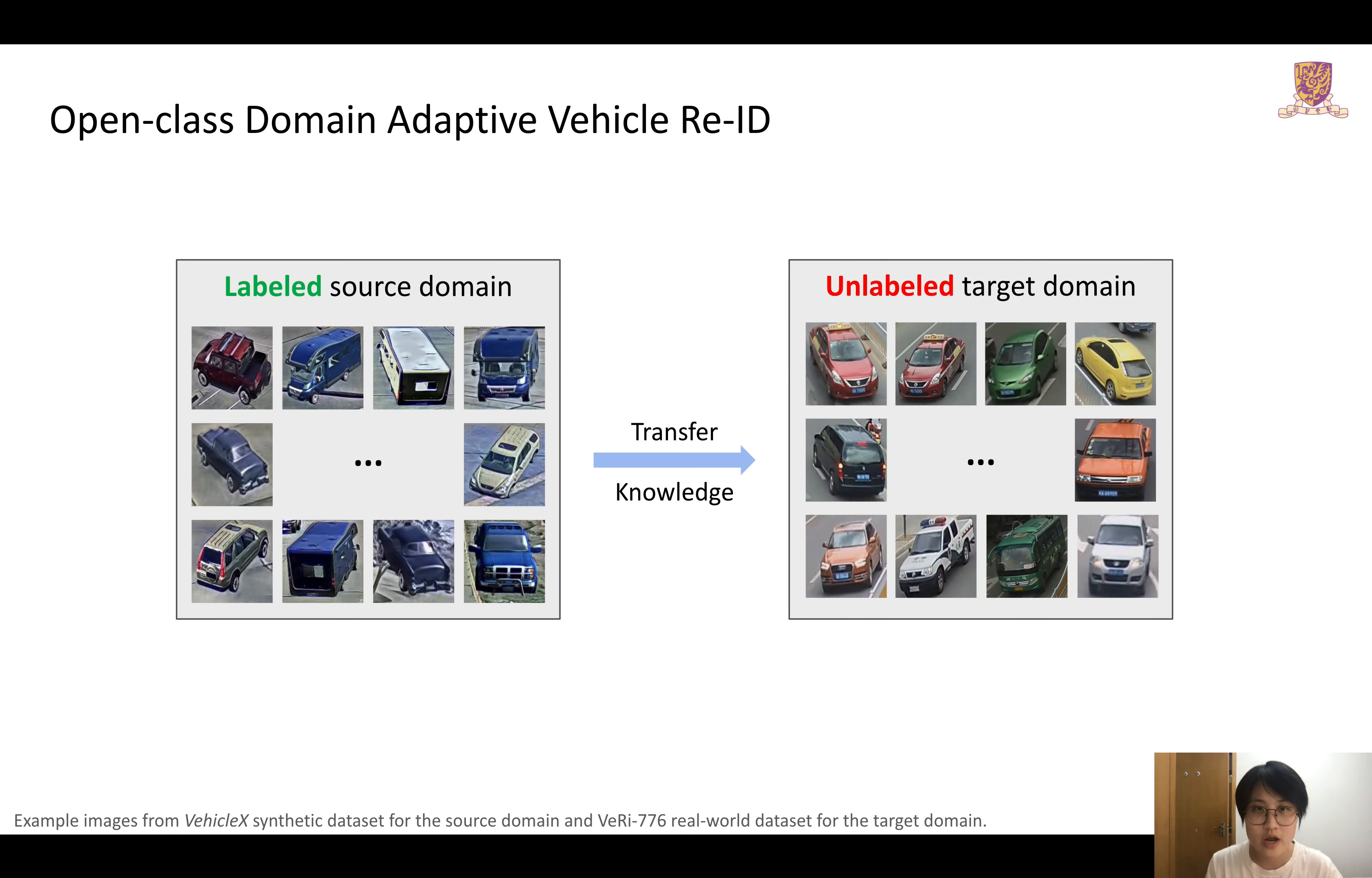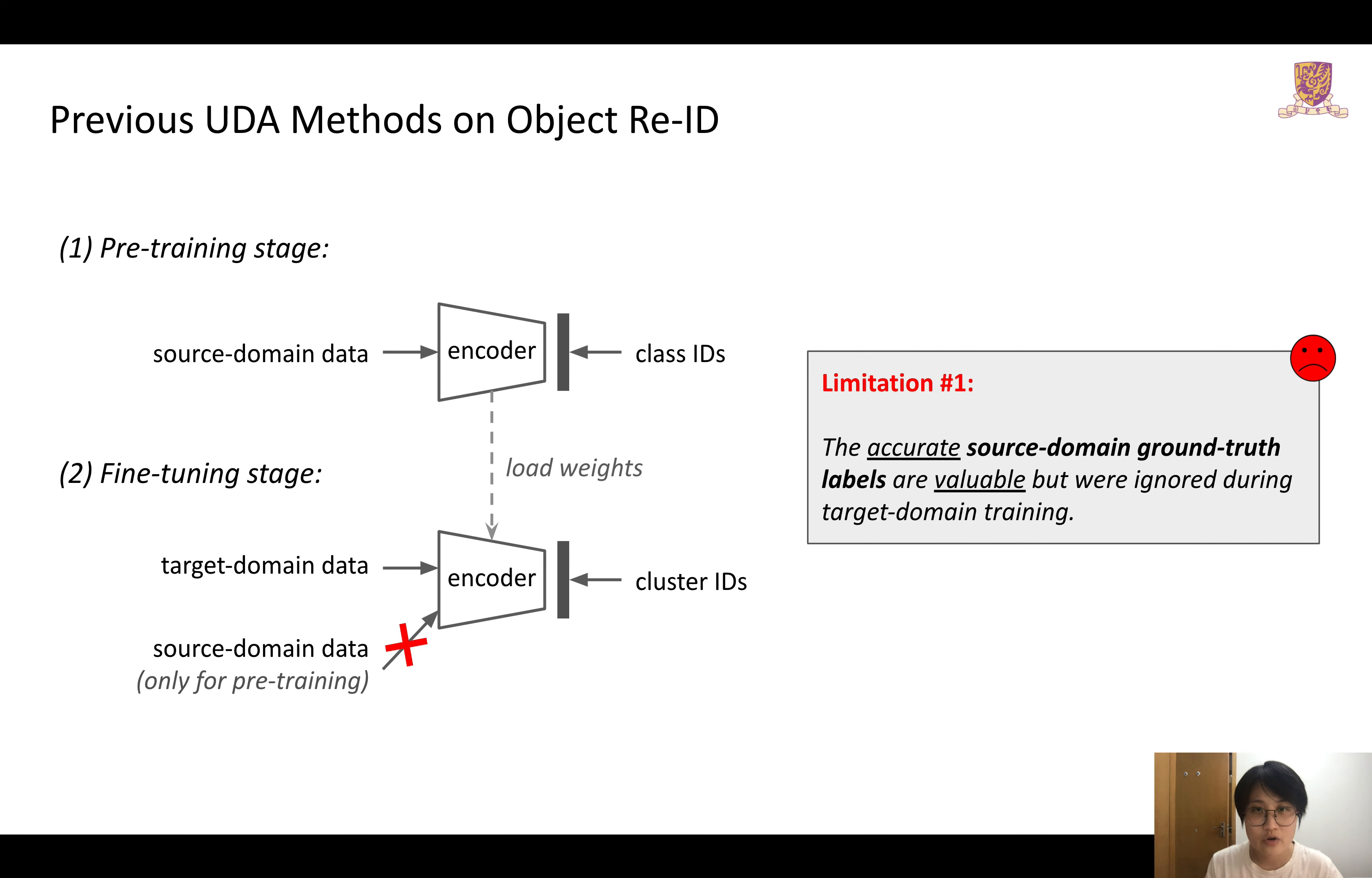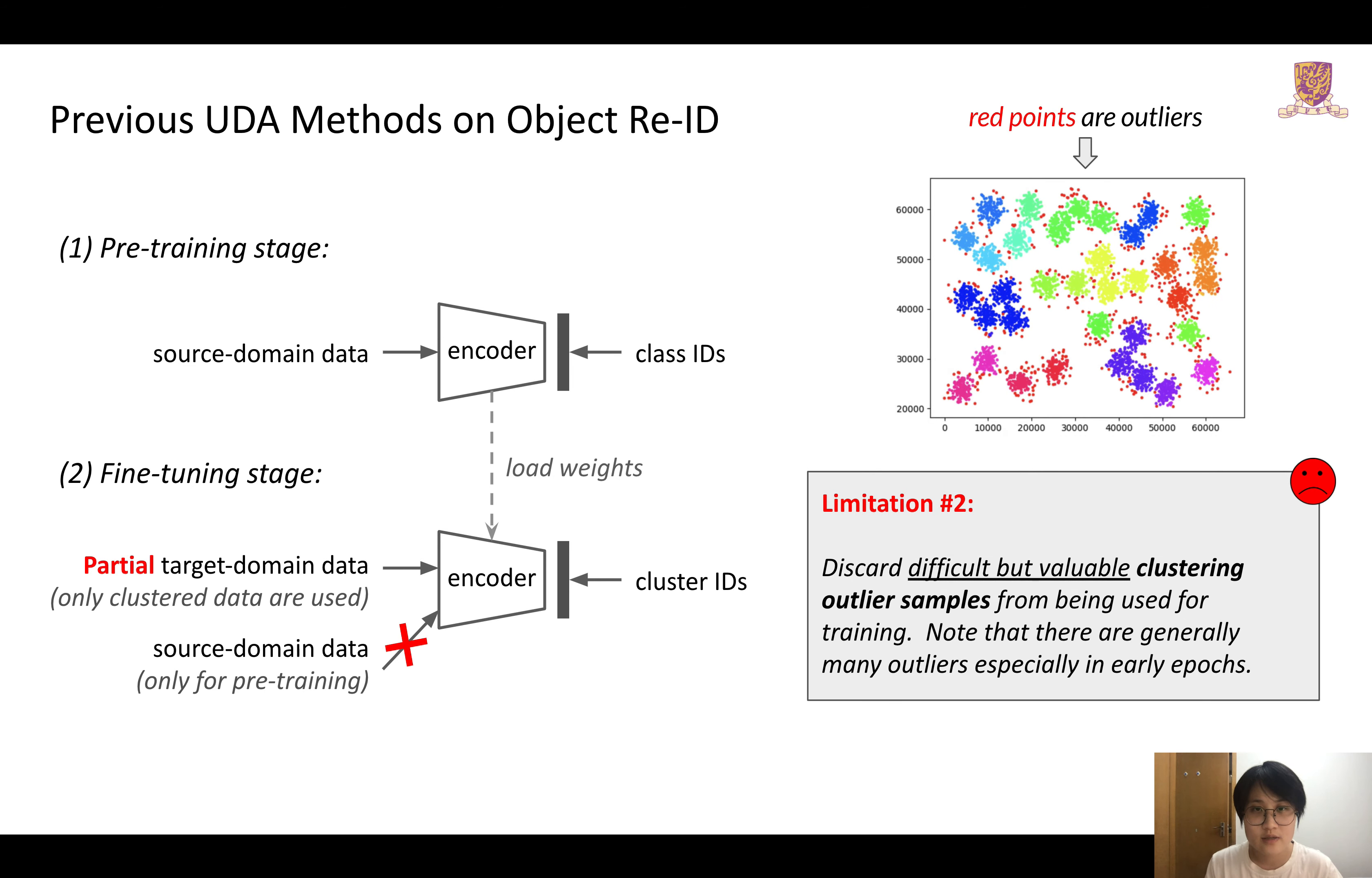Existing methods generally follow a two-stage training scheme, and we argue that there exist two major limitations that hinder their further improvements. First, the accurate source domain ground truth labels are valuable but were ignored during their target domain training. Second, they simply discarded the clustering outliers, which are actually difficult but valuable training samples.